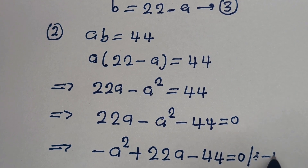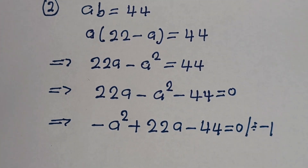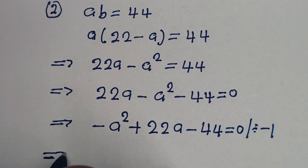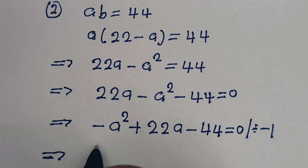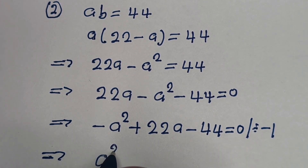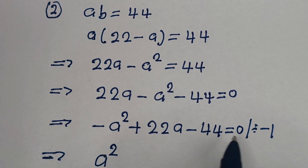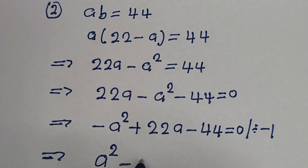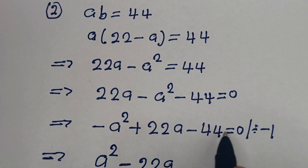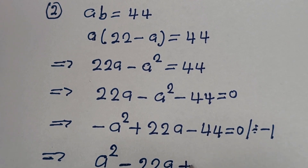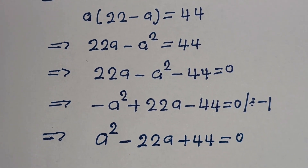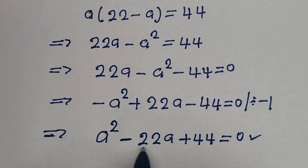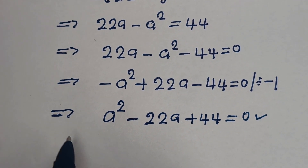Now let us divide the whole equation by minus 1. We have minus A squared divided by minus 1, which is A squared, plus 22A divided by minus 1, which is minus 22A, minus 44 divided by minus 1, which is plus 44, equals 0. This is a quadratic equation, which can be solved with the quadratic general formula.